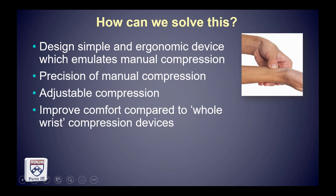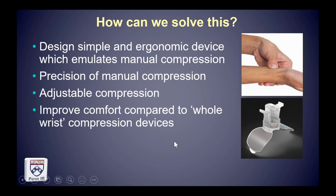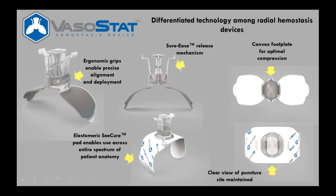So if you take the physics of manual compression and turn it into an ergonomic simple device that's very intuitive to use — that was the rationale, and that led to the VasoStat device. It has a ratcheting plunger, which is basically the thumb, and adhesion to the wrist accomplished through adhesive footplates and an elastomeric pad that goes on top — that's your fingers. You take your thumb, you align it and adjust it, and the rest of the device follows.